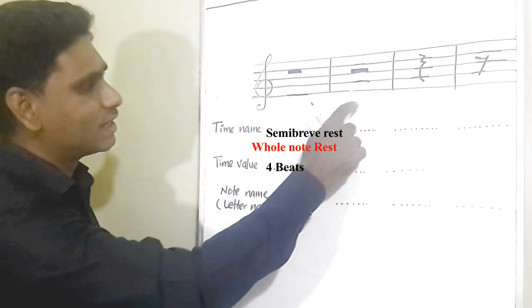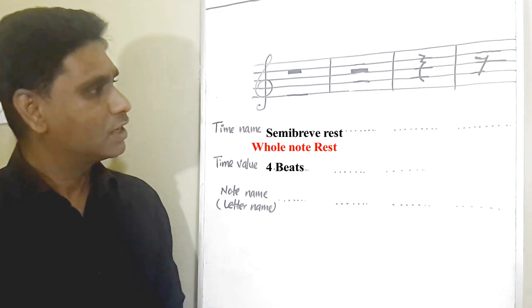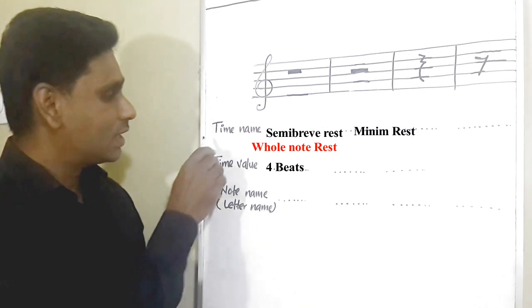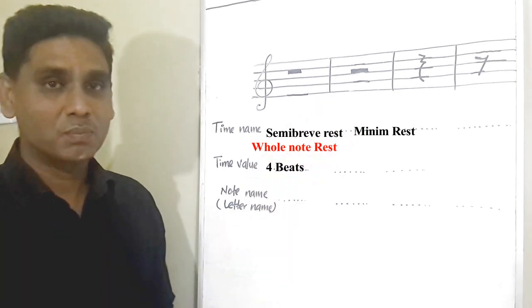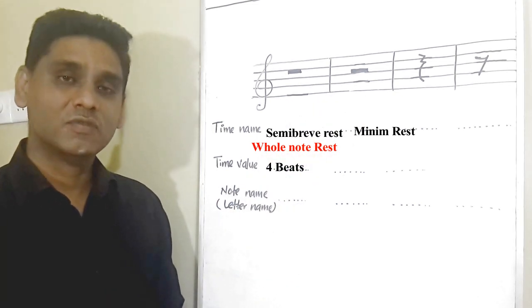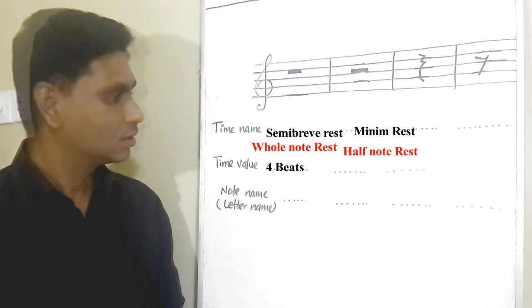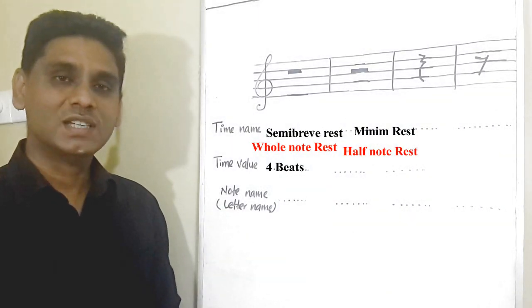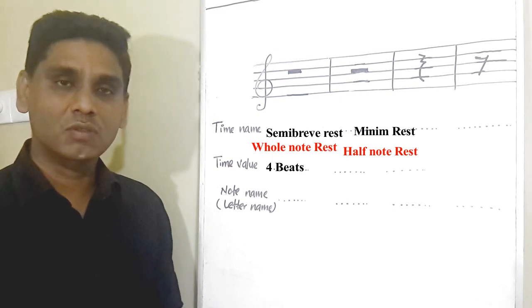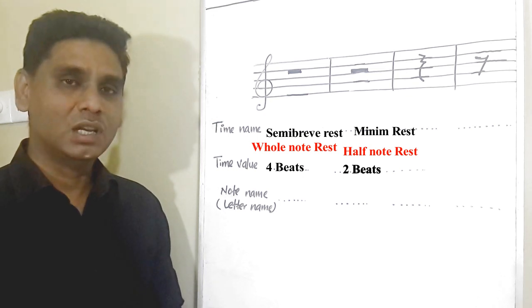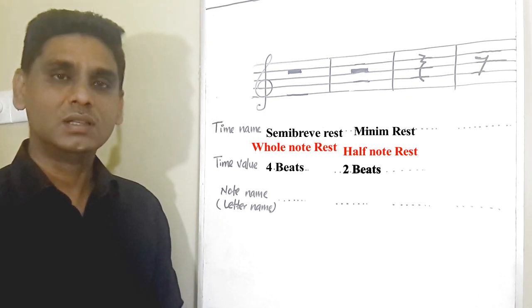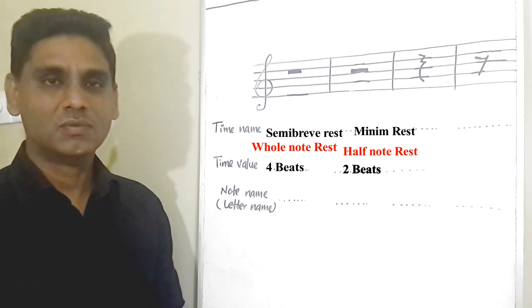Let's go to the second music rest. This is the minim rest. The time name of this symbol is minim rest, or half note rest. The time value of the minim rest has the same beat value as the minim note — it is 2 beats. But we do not play the rest; we only count the beats.